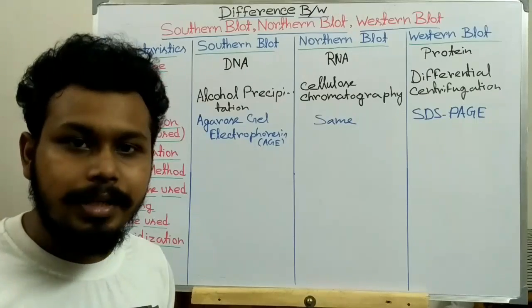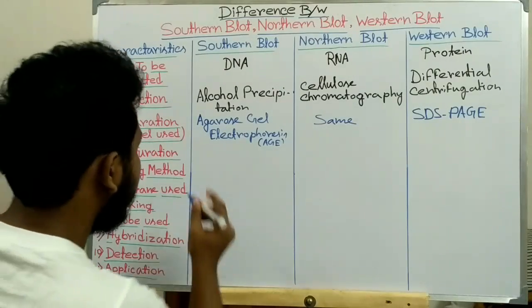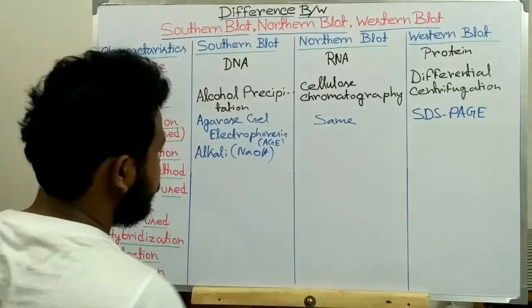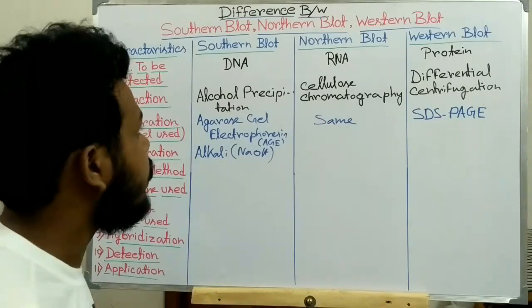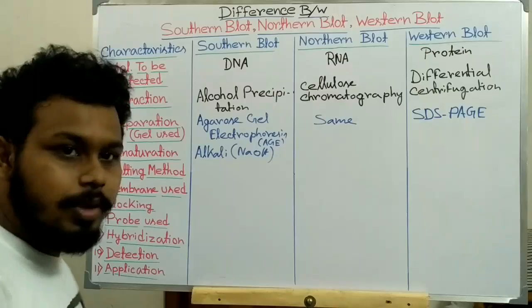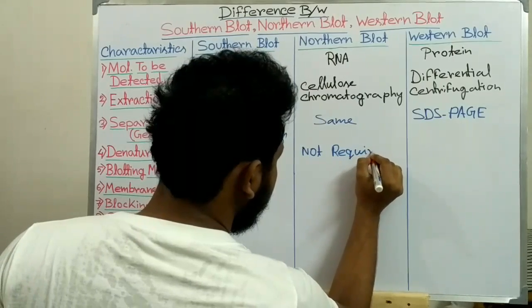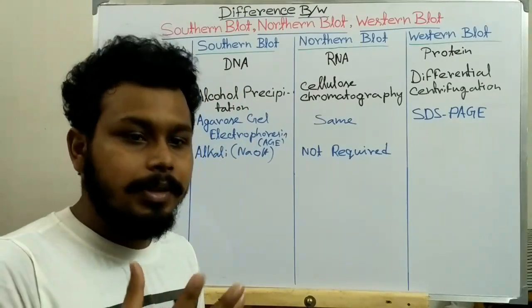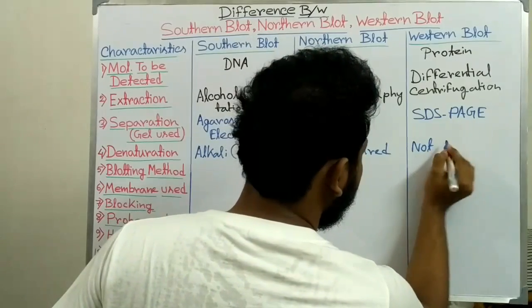The next characteristic is denaturation. In Southern blot, DNA is present in a double-stranded structure, so to denature it into single-stranded form, alkali treatment — such as NaOH treatment — is used. The single-stranded DNA fragments can then hybridize with a single-stranded probe. In Northern blot, RNA is already single-stranded so denaturation is not required. In Western blot, the SDS in polyacrylamide gel electrophoresis disrupts the secondary and tertiary structure of the protein, so further denaturation is also not required.